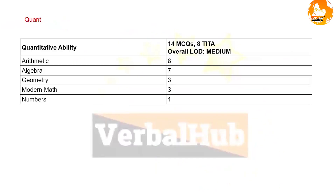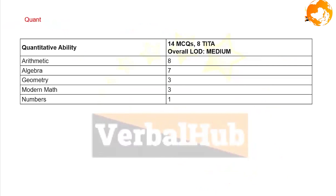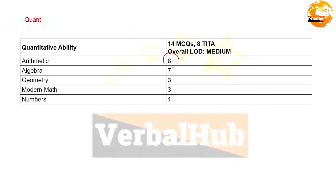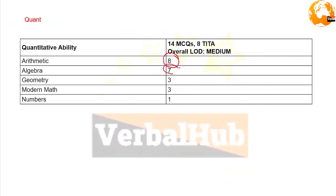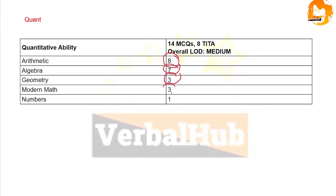Coming to the Quant part: the total number of questions from Arithmetic was eight, Algebra was seven, Geometry had three questions, Modern Math had three, and Numbers had one question.